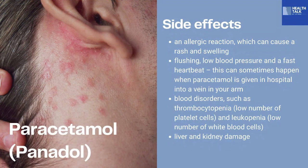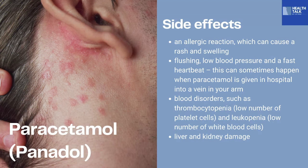However, for patients taking paracetamol or Panadol, remember the side effects. These include an allergic reaction, which may manifest as rash and swelling, flushing, low blood pressure, palpitations or fast heartbeat or tachycardia — which can sometimes happen when paracetamol is given intravenously. Some patients may experience blood disorders such as thrombocytopenia, which is a low platelet count, or leukopenia, which is a low white blood cell count. In some cases, the patient's liver and kidney enzymes are affected, leading to certain damage.